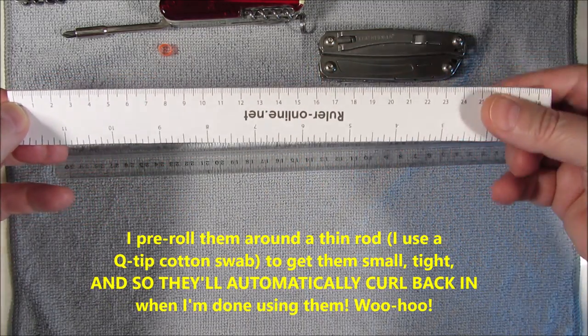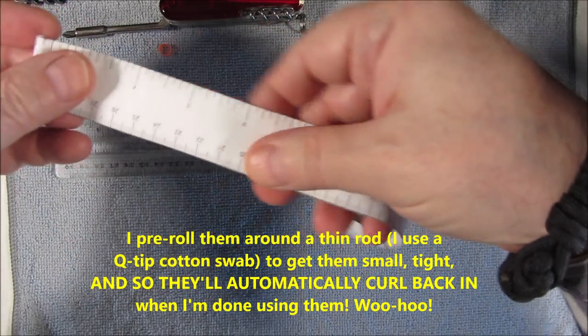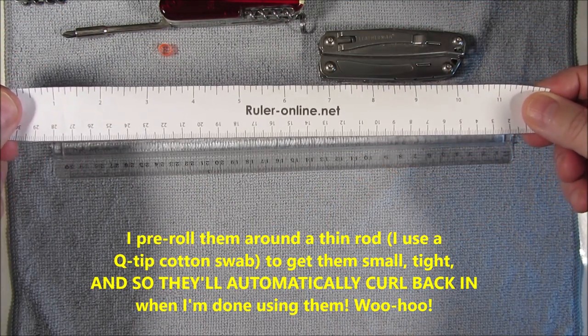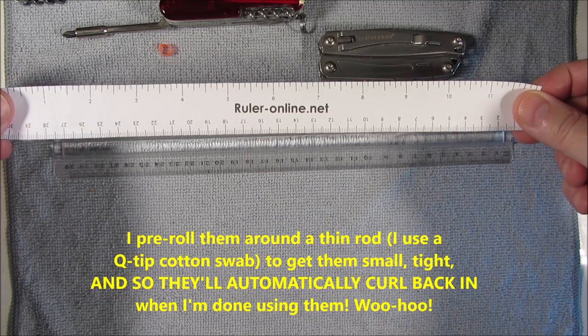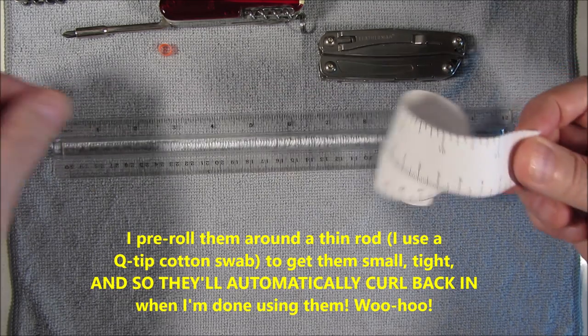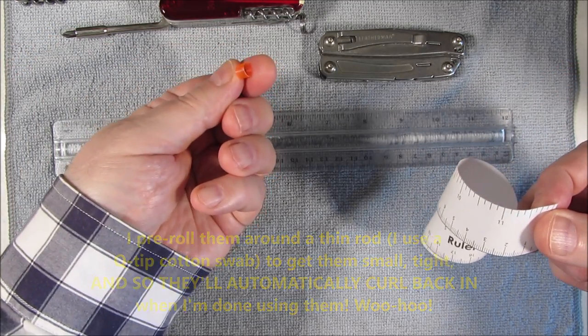And as you see here, I've made these by printing them out on my printer, so they're effectively free from a site called ruleronline.net. And this is just a little cut length of drinking straw.